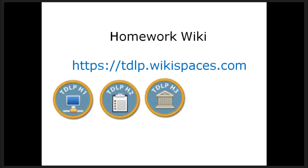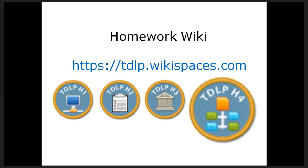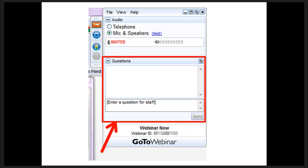The homework wiki is at tdlp.wikispaces.com. These are the three badges currently available, and this is the reveal for the fourth badge for this week's course. Austin Greathouse, our wonderful producer, has come up with badges that have relevant icons for the topic. The first was virtual law practice, TDLP-2 is for document automation with a clipboard icon, the third was for tech in the courts, and this one is for unbundled legal service delivery. As always, if you have questions, post them into the question box. We will ask them of the speaker after his presentation, and those we don't have time for we post to the wiki.